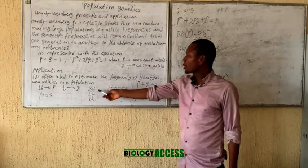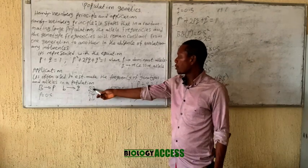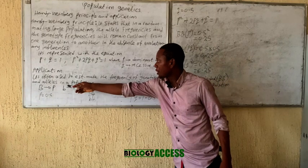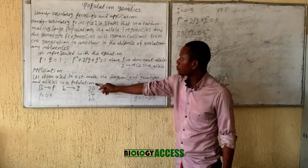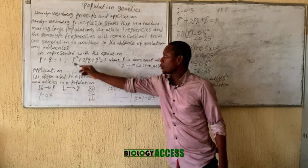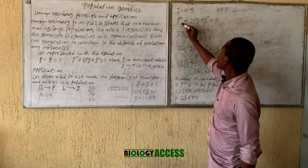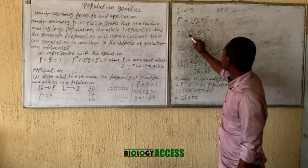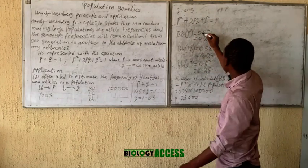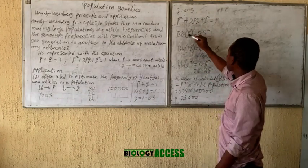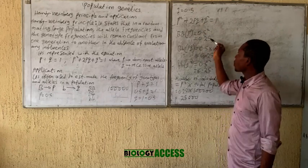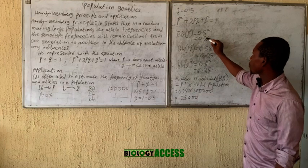If you are asked to calculate the genotype frequency for BB, you know that BB is represented as P squared in the Hardy-Weinberg equation. So P squared, which is BB, is 0.5 squared. When it is squared, you have your answer as 0.25.